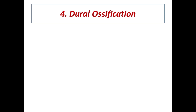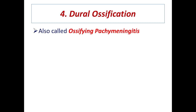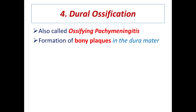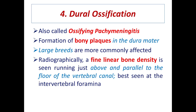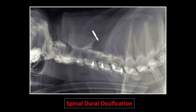Dural ossification, also called ossifying pachymeningitis, involves formation of bone plaques in the dura mater. It is also very common in large breed dogs. Radiographically, a linear bone density will be seen running just above and parallel to the floor of the vertebral canal. In these cervical vertebrae, at C3 to C5, a linear bone density is seen — this is spinal dural ossification.